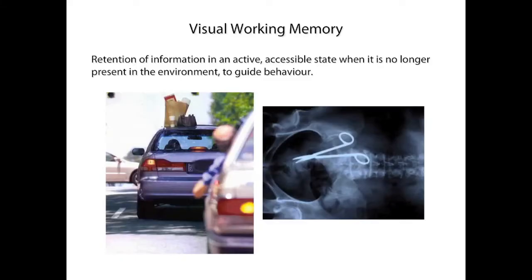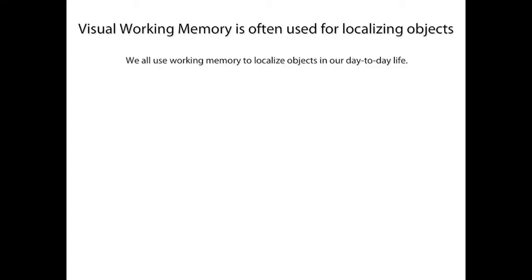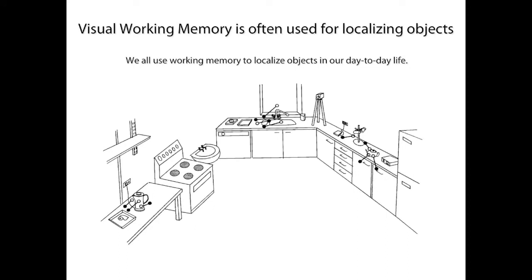However, we are only aware of the importance of this cognitive function when things go wrong. For example, we've all experienced a situation when we're looking for our glasses only to find them on top of our heads. We usually use our working memory or short-term memory to locate objects in the environment, for example looking for your keys in a cluttered kitchen.